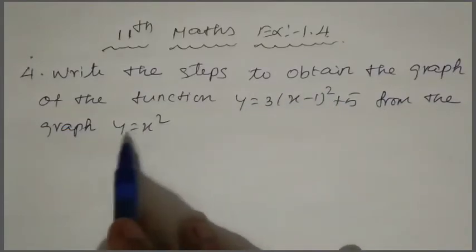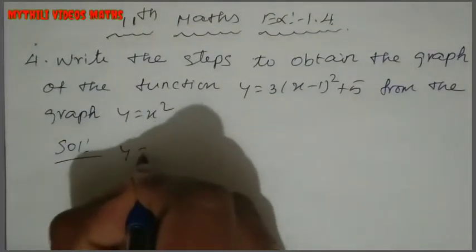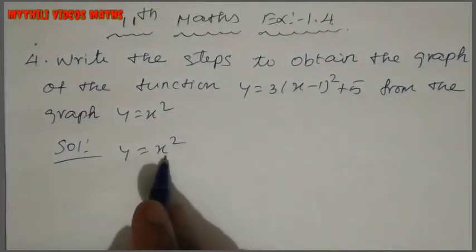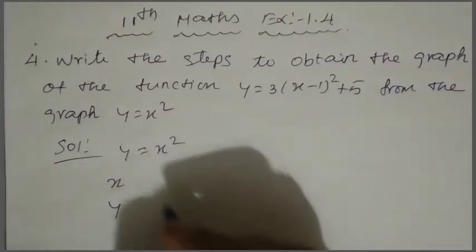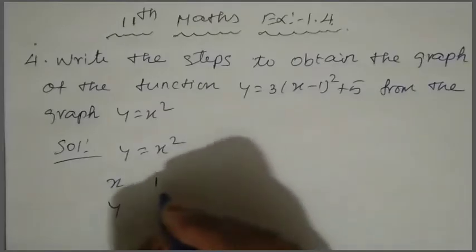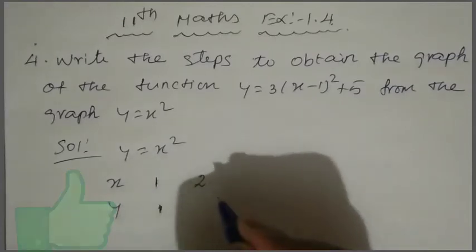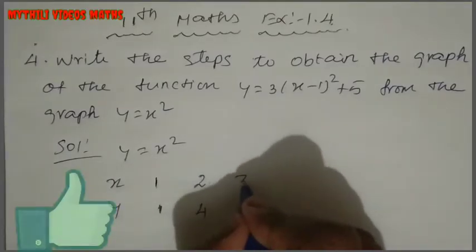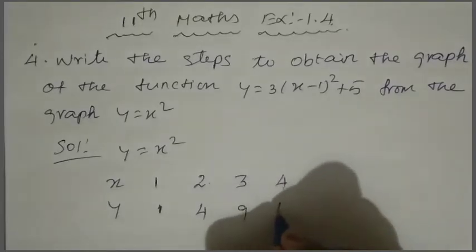First, we start with y equal to x square. We get the table of values for x and y: x=1 gives y=1, x=2 gives y=4, x=3 gives y=9, x=4 gives y=16.